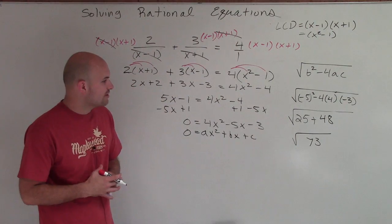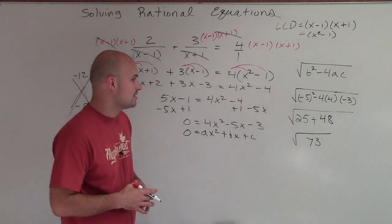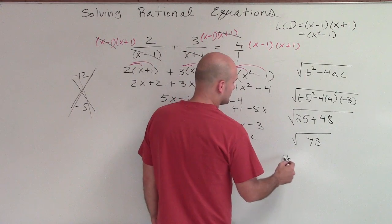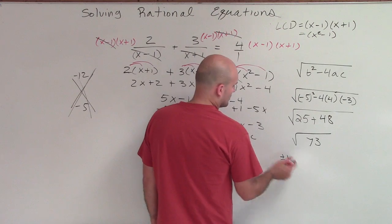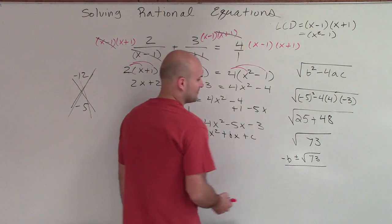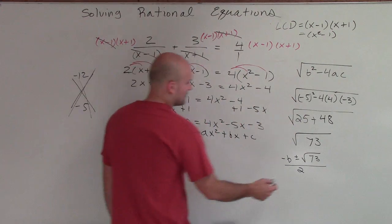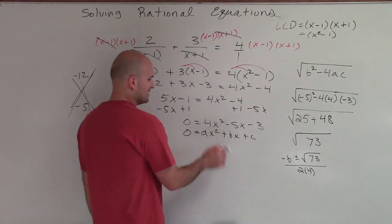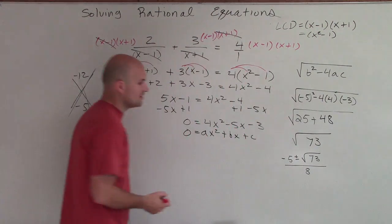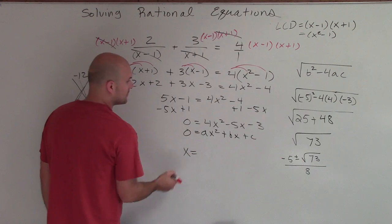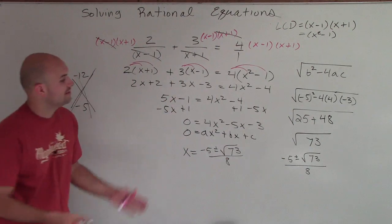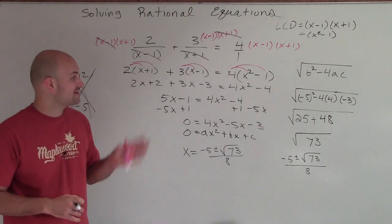So the square root of 73 will be part of our zeros. Now let's finish the quadratic formula: it's the opposite of b, plus or minus the square root of 73, divided by 2 times a, which is 4. The opposite of b is 5, and 2 times 4 is 8. So our final answers — our values for x — are going to be 5 plus or minus the square root of 73, all divided by 8. And that is how you solve this rational equation.